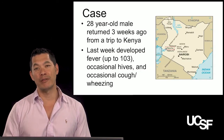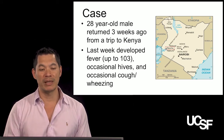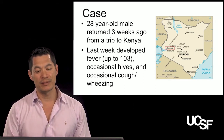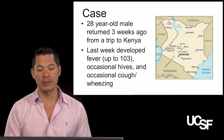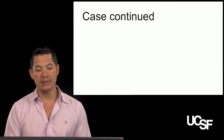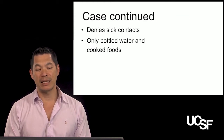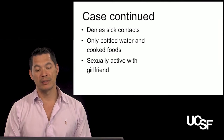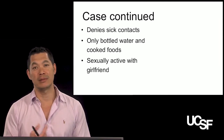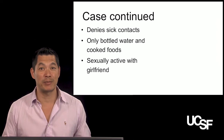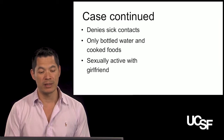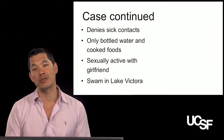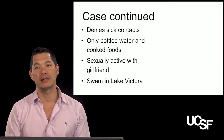A 28-year-old male returned three weeks ago from a trip to Kenya, where this particular fluke is endemic. Last week he developed fever up to 103°F, occasional hives, and occasional cough and wheezing. He denies sick contacts, has only had bottled water and cooked foods. He swam in Lake Victoria, which is probably the primary risk factor in this case.